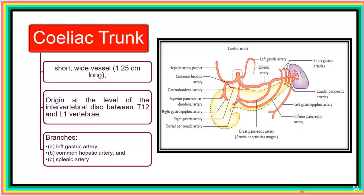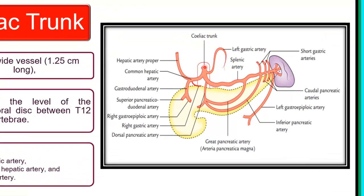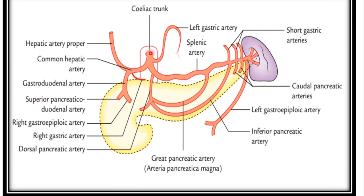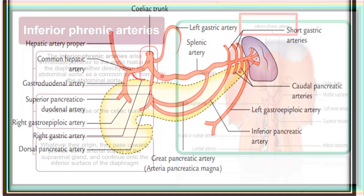The celiac trunk is a short, wide vessel about 1.25 cm in length. It takes origin from the anterior aspect of the abdominal aorta at about the 12th thoracic vertebra and its junction with L1 vertebra. Its major branches are the left gastric artery, the common hepatic artery, and the splenic artery.